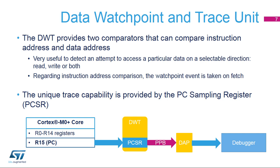To read or write a core register, such as R0, the debugger has to halt the core. However, the current value of R15, which is the program counter, is readable in a memory-mapped register contained in the DWT called the PCSR. The debugger can read the PC value without halting the Cortex-M0+ core.